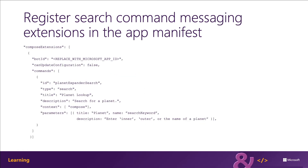To register a search command messaging extension, add it to the composed extensions array in the Microsoft Teams app manifest as you see here. The type property specifies that this is a query command, otherwise known as search. The context property defines where the messaging extension can be invoked, and the parameters property defines the input fields displayed in the search experience when the messaging experience is invoked.